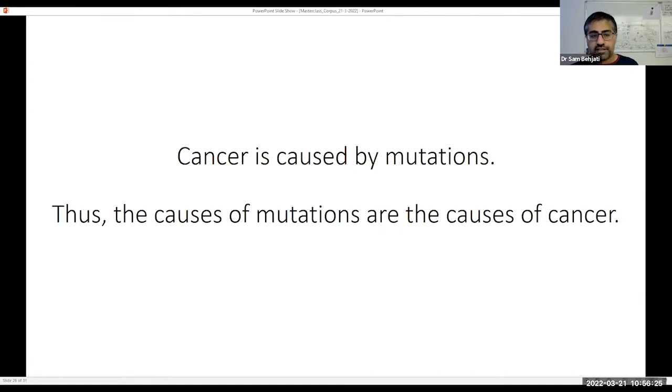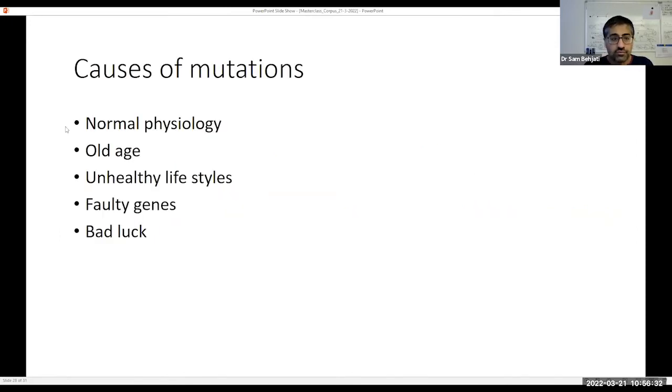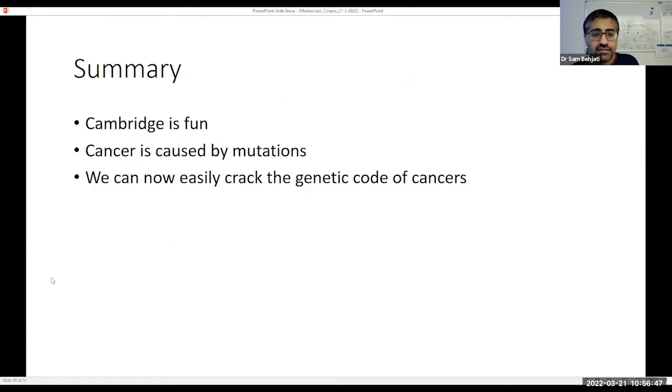So cancer is caused by mutations. I'm going back to what I said initially. Therefore, the causes of mutations are the causes of cancer. So what causes mutations? Normal physiology, aging. With every cell division, we acquire mutations. Unhealthy lifestyles, smoking, UV light exposure without sunscreen, faulty genes, and just a bit of bad luck. So let me summarize. Cambridge is a great deal of fun. Cancer is caused by mutations. If you haven't learned anything else from today, please take this message away. And we can now easily crack the genetic code of cancers, which is heralding a new era of modern oncology. And we've got about 15 minutes left. And I suggest that if you put your questions in the Q&A, we can go through those.